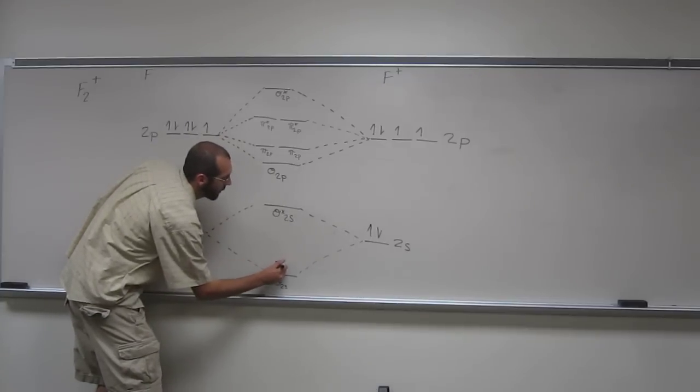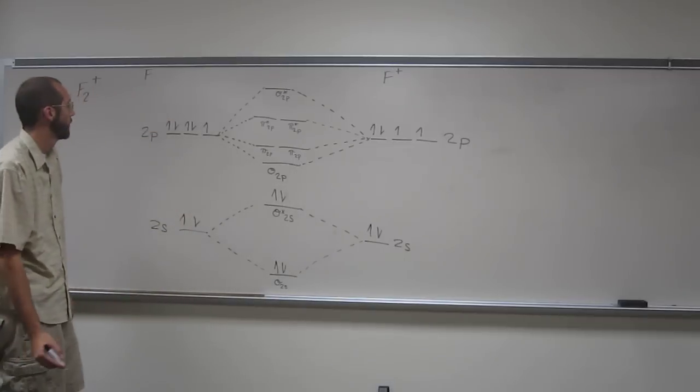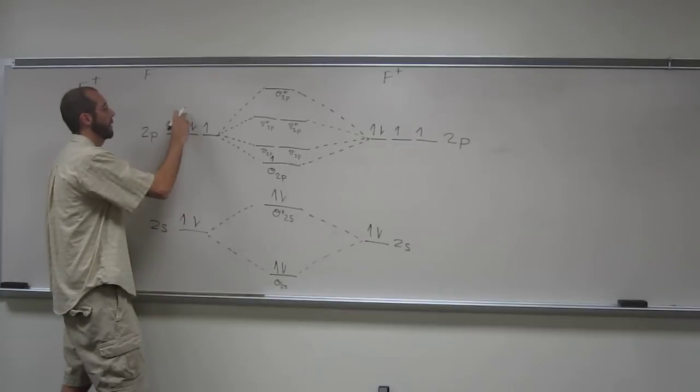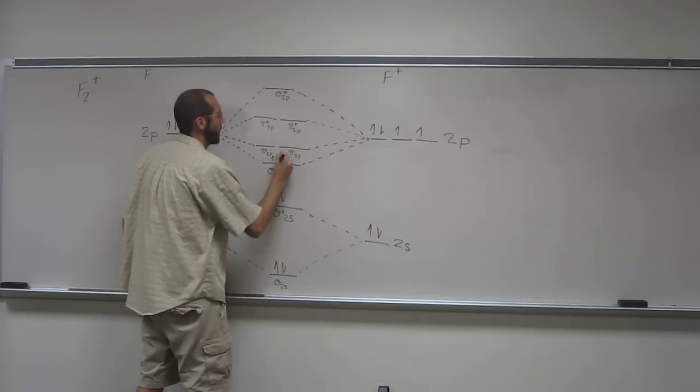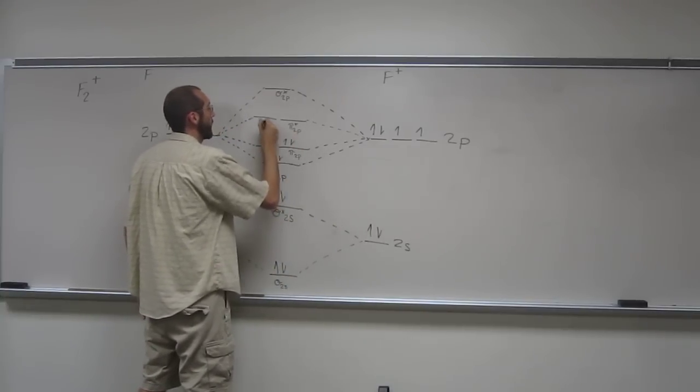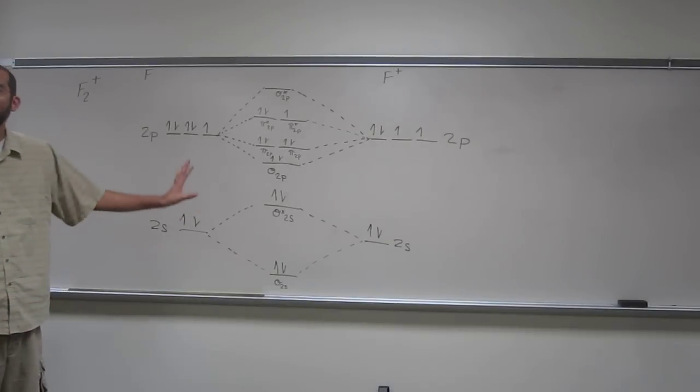So remember your filling rules. So 1, 2, 1, 2. So that's all 4 of those electrons. So how many electrons do we have? 1, 2, 3, 4, 5, 6, 7, 8, 9. So 1, 2, 3, 4, 5, 6, 7, 8, 9. Is everybody OK with that?